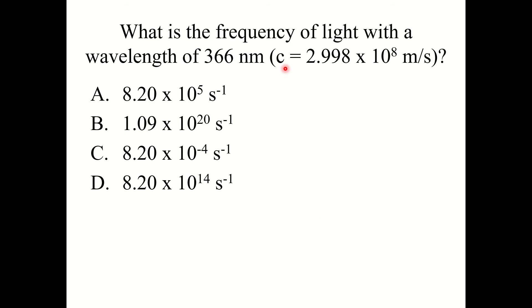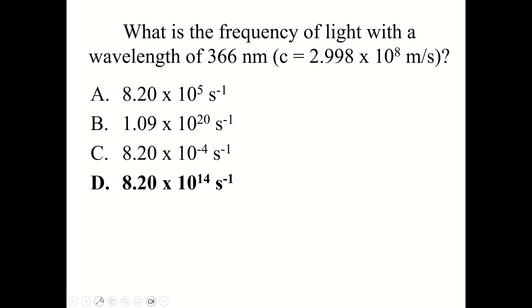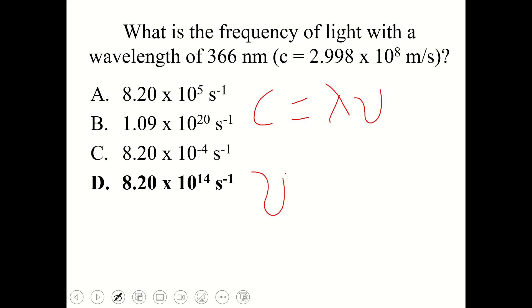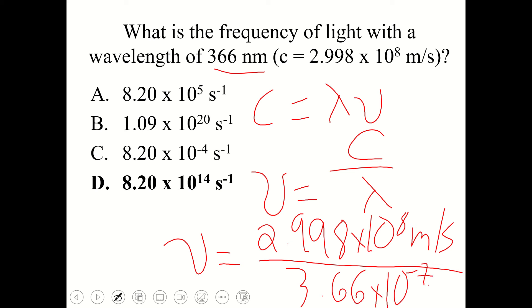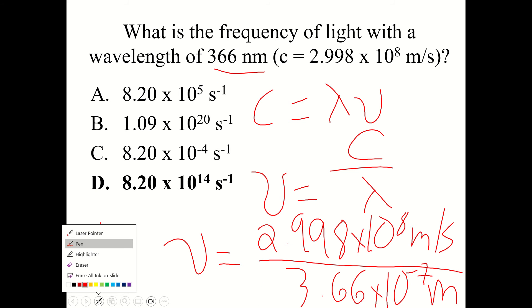Knowledge check: What is the frequency of light with a wavelength of 366 nanometers, where C equals 2.998 times 10 to the 8th meters per second? The correct answer is D: 8.20 times 10 to the 14th inverse seconds. Using nu equals C divided by lambda, convert 366 nanometers to 3.66 times 10 to the negative 7th meters, then divide — you get 8.20 times 10 to the 14th inverse seconds. Pay attention to your units, but it's a pretty straightforward problem.